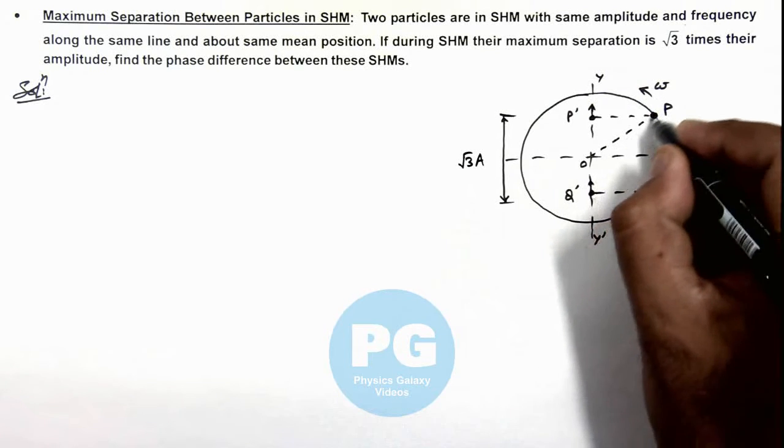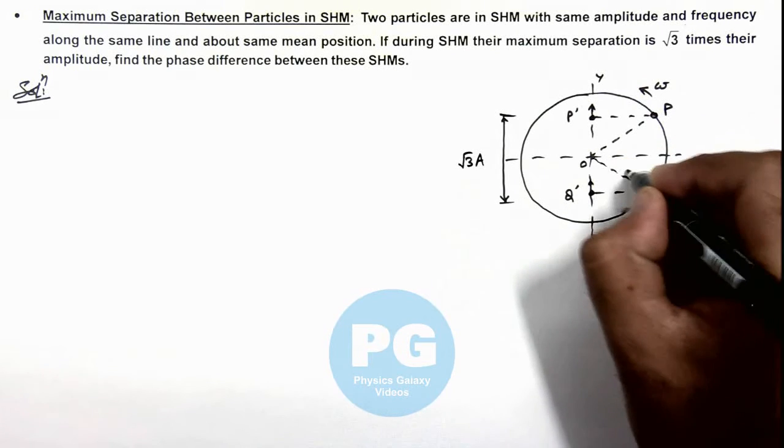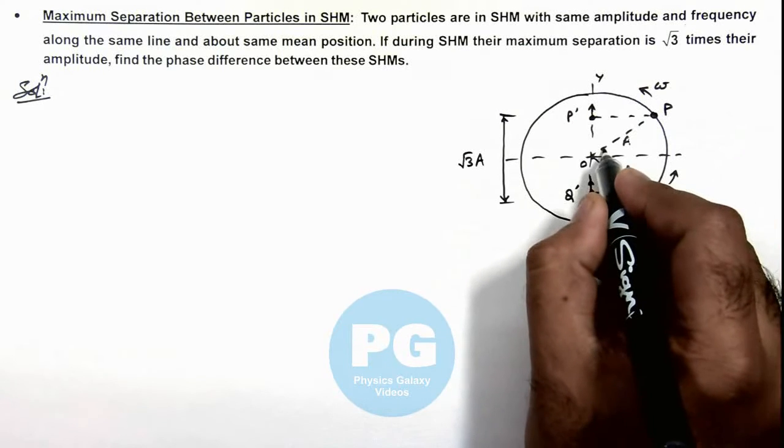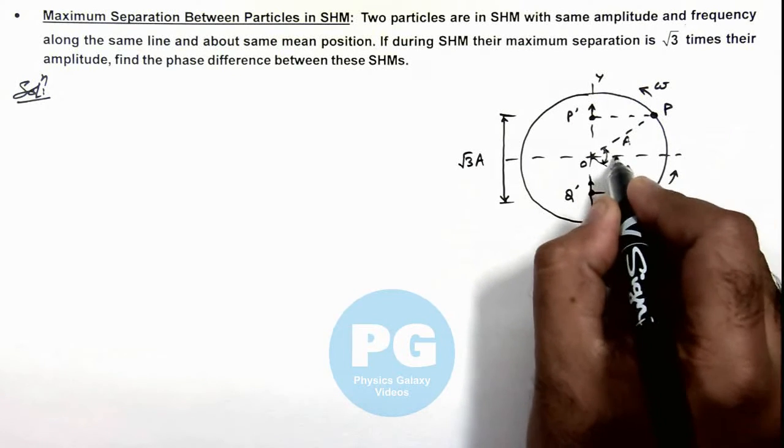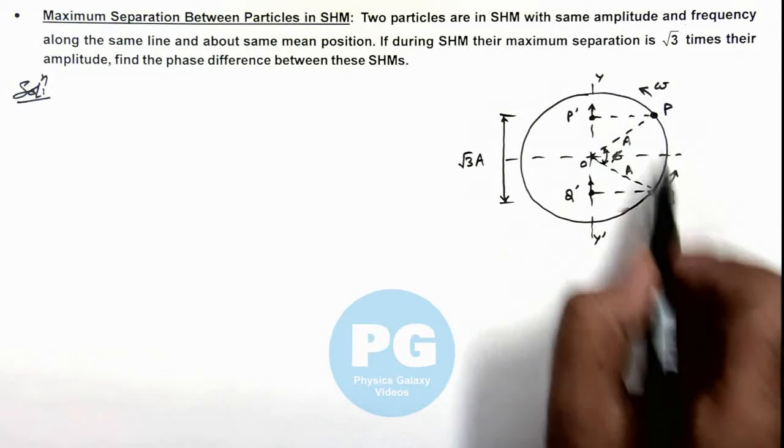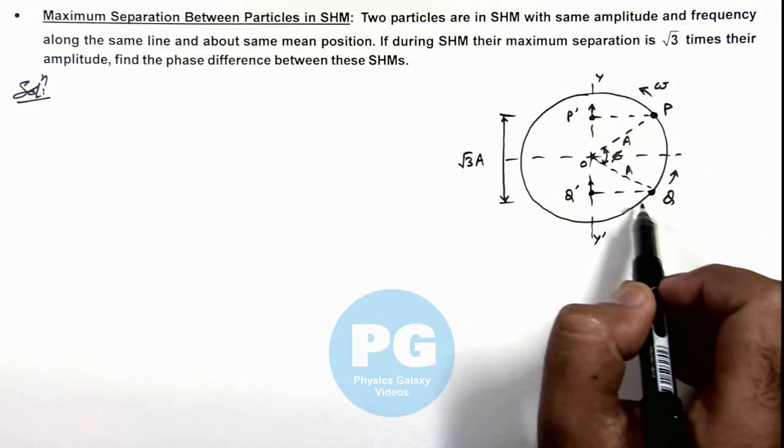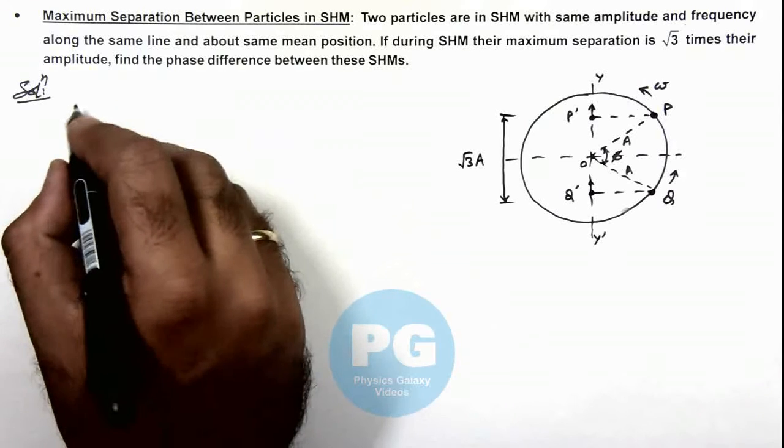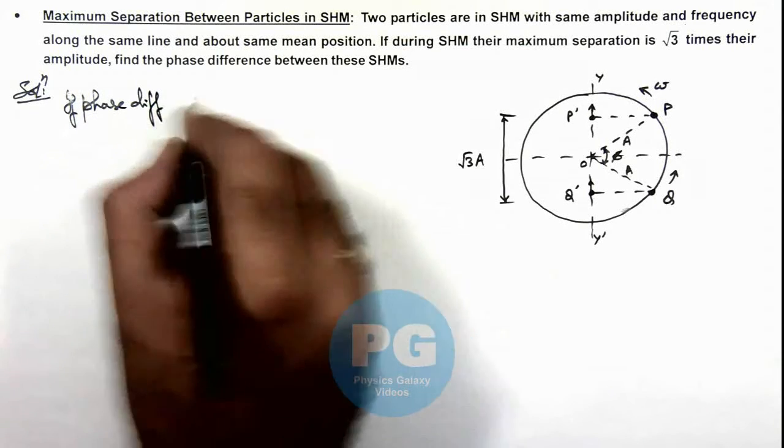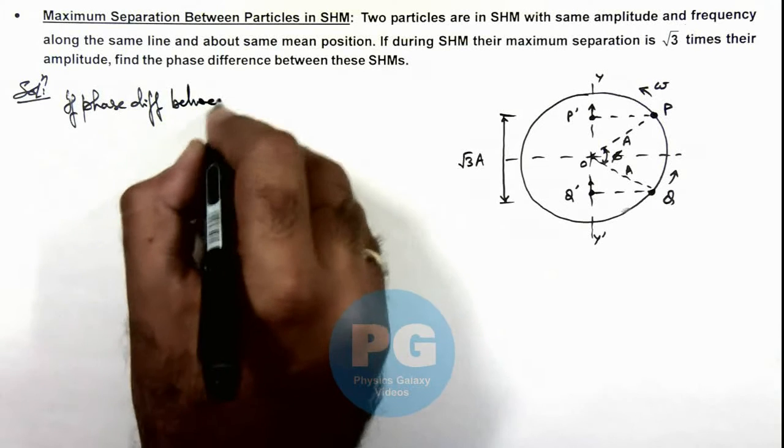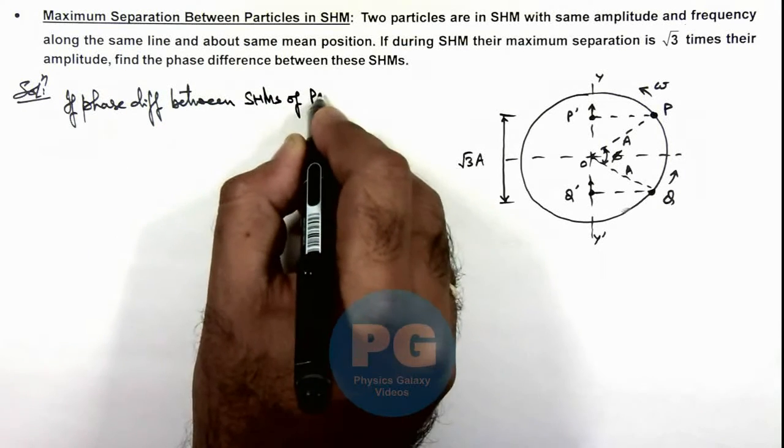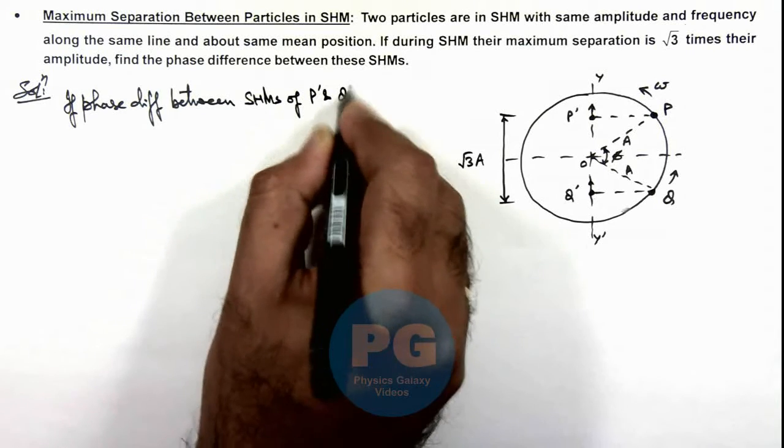The amplitude of SHM is given as A. So here we can say if the phase difference between the two particles which are executing SHM is phi, which is the angular difference between the reference particles, so here we can write: if phase difference between SHMs of P prime and Q prime is phi.